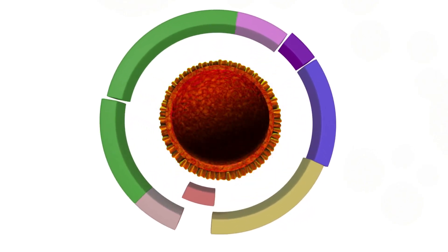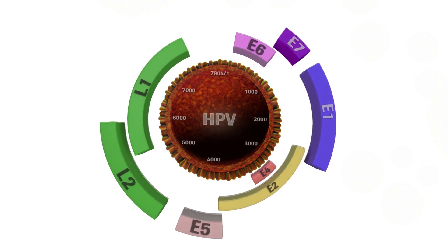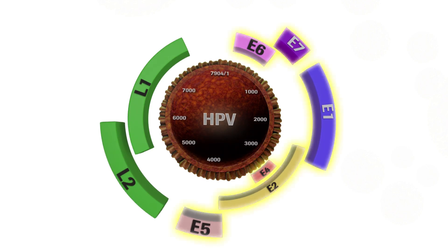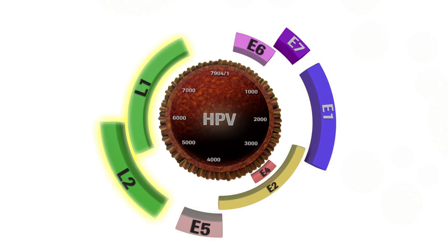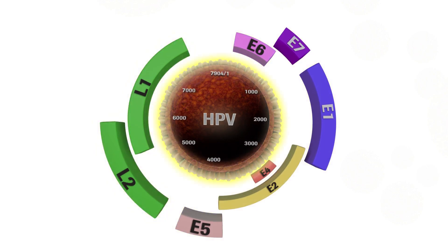The HPV gene structure, or genome, is organized into three regions with eight overlapping open reading frames: six early genes, E1 to E7, two late genes, L1 and L2, and one non-coding long control region, or LCR.